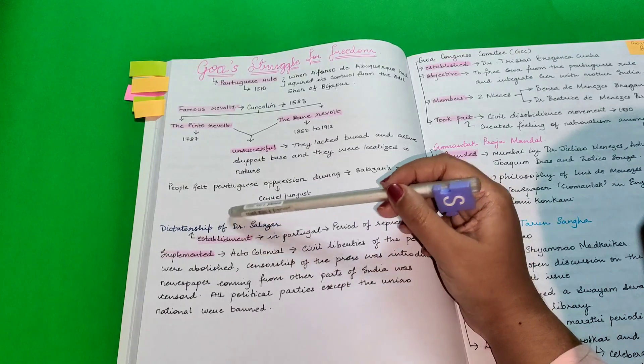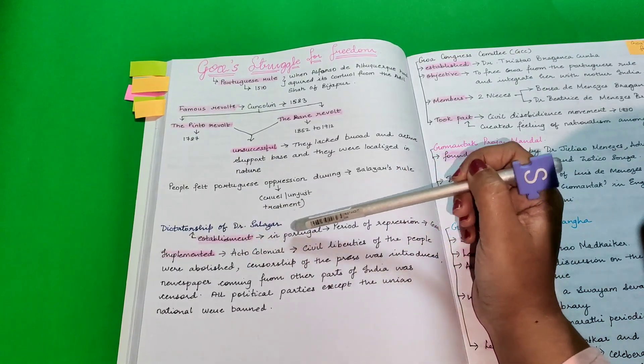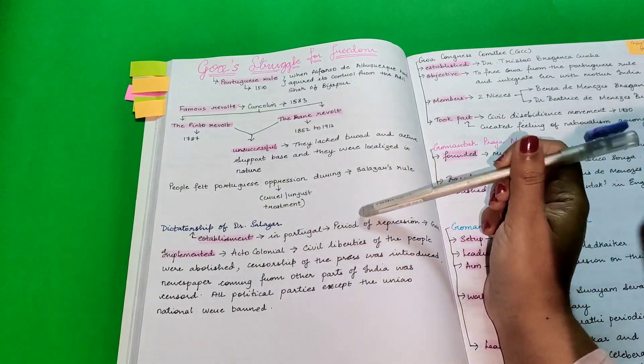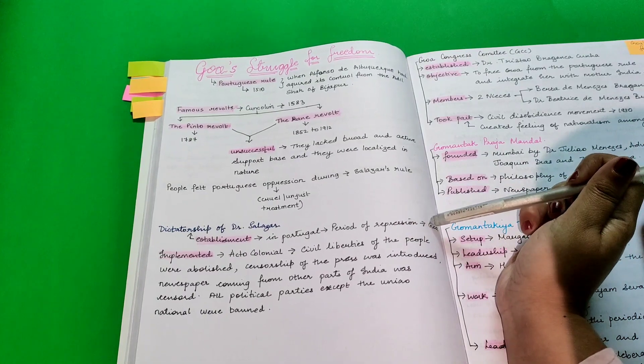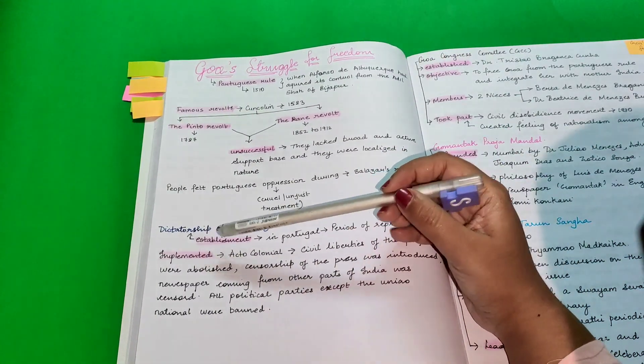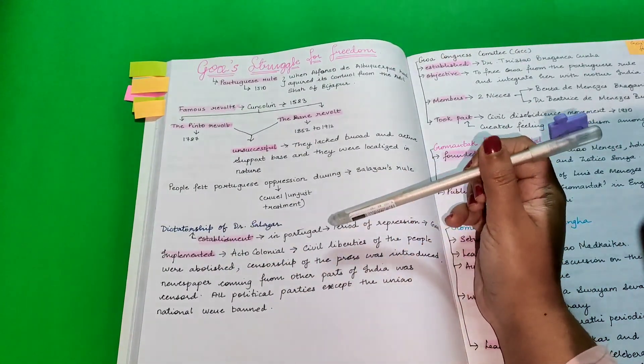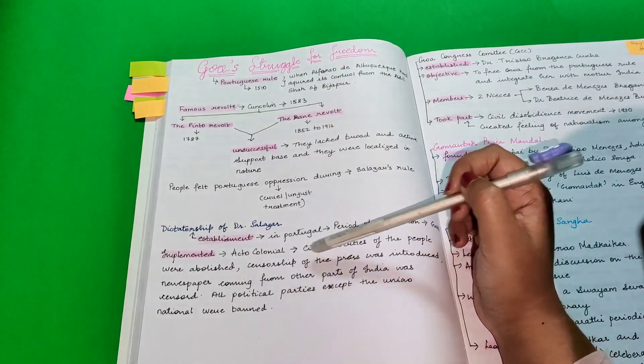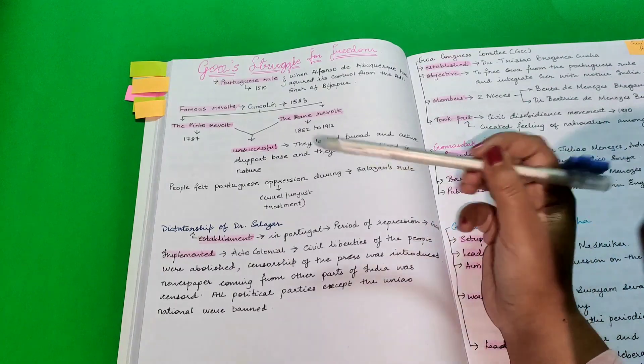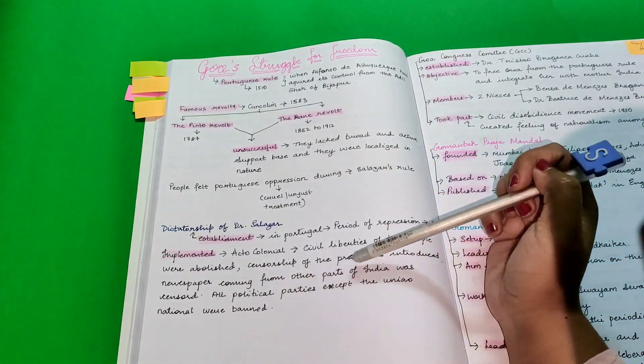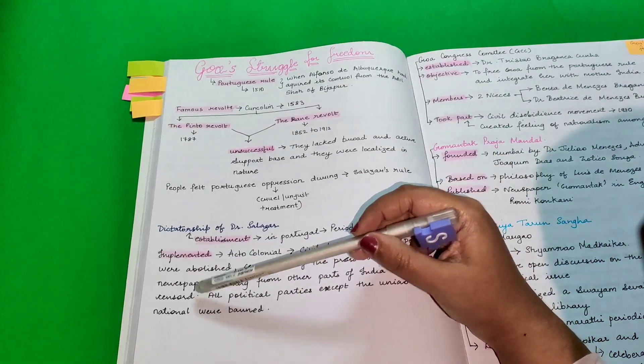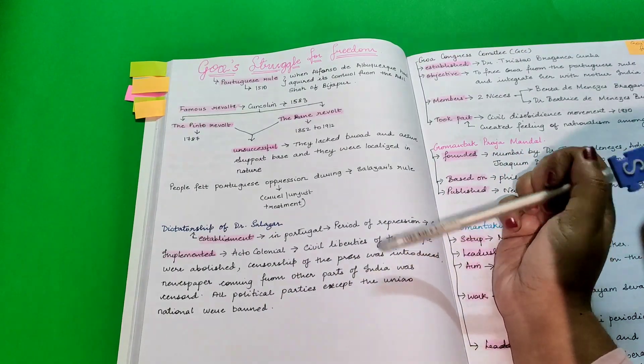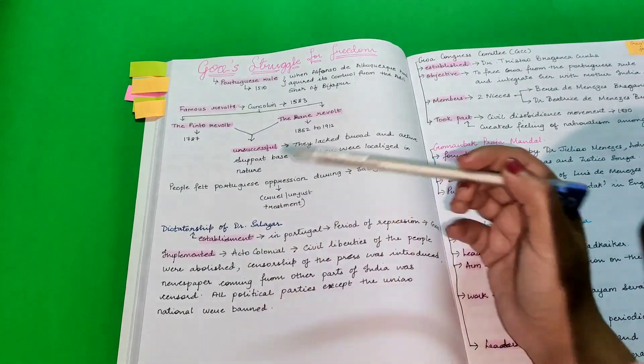The establishment of this dictatorship in Portugal was the period of repression in Goa. It implemented a colonial system where civil liberties of the people were abolished. Censorship of the press was introduced. Newspapers coming from other parts of India were censored. All political parties except the UNO national were banned.